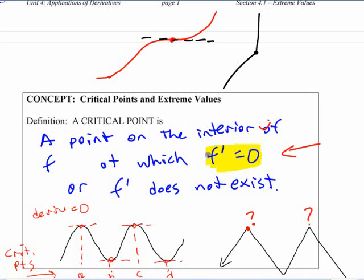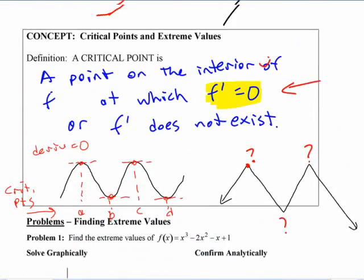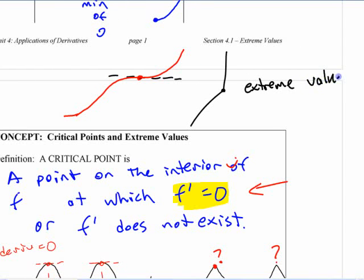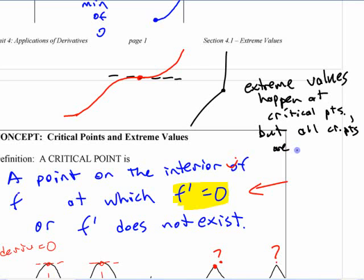I don't know if I've got a place to write that in here, but you can maybe put that at the side or above or something. Extreme values happen at critical points, but all critical points aren't necessarily extreme values. Okay. Extreme values happen at critical points, but all critical points are not necessarily extreme values.